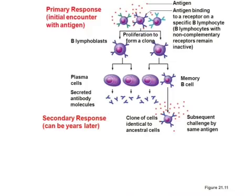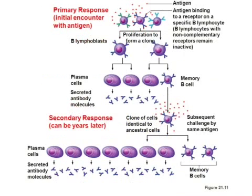On a secondary response — which could be years or months later — that same antigen comes around and binds to the memory cell's immunoglobulin receptor. Now the cloning is even faster and you get far more clones and antibodies than on the first exposure. On first exposure it takes about five days before actual antibody production ramps up; on a second exposure you can get that antibody spike in as little as two to three days because of the memory cell.